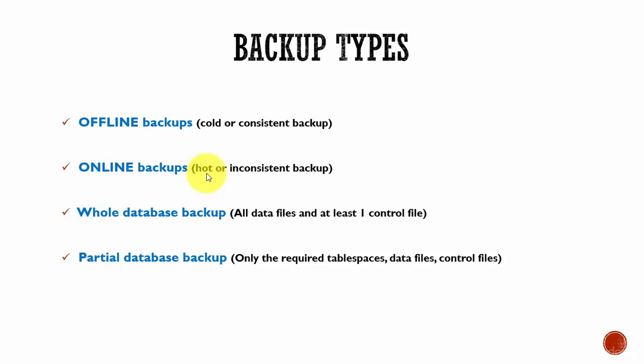In an online backup, there is no guarantee that the data file system change number and the control file system change number will be the same. That is why it can lead to an inconsistent backup.